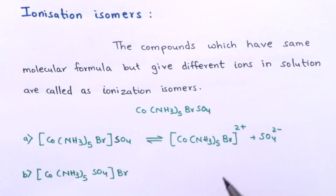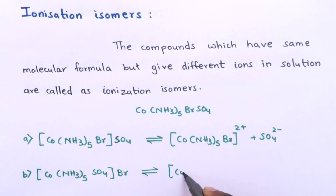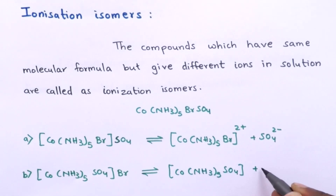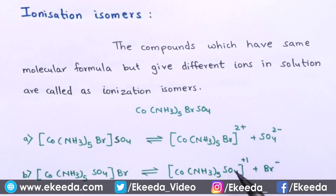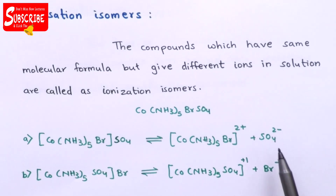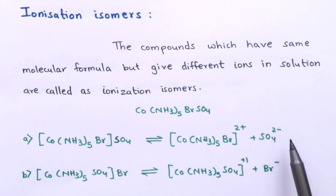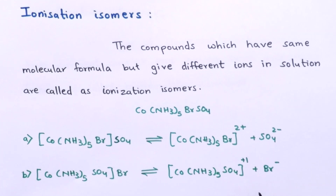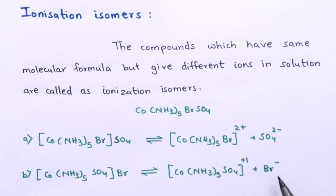So the first complex acquires a 2+ charge. The second complex ionizes to give [Co(NH₃)₅SO₄]⁺ and Br⁻, acquiring a +1 charge. The SO₄²⁻ ion from the first complex can be precipitated with BaCl₂ to form BaSO₄. If the second complex is treated with AgNO₃, it precipitates as AgBr.